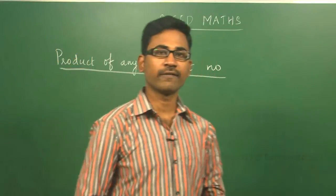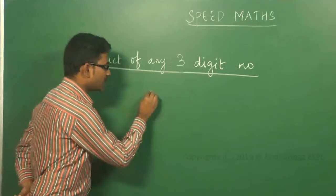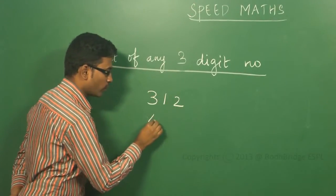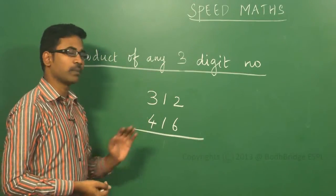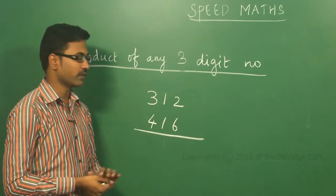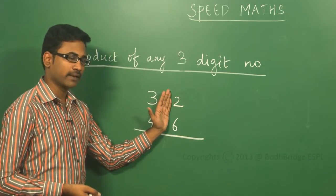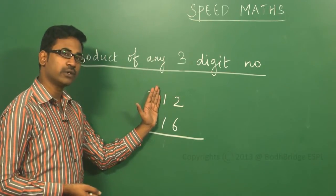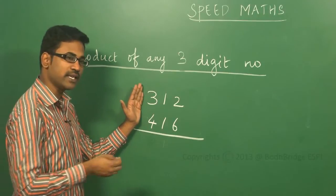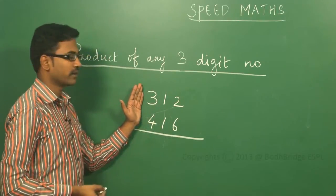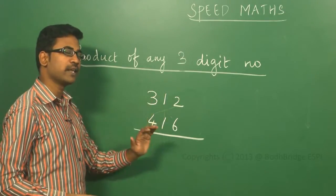The next topic is the product of any three-digit number. For example, if the numbers are 312 and 416, the procedure may look a little complicated initially, but with practice you can do it mentally. The first step is the first column, the second step includes the second column with cross multiplication and addition, the third step includes all three columns, the fourth step eliminates the last column, and the fifth step eliminates the next one.